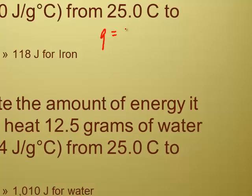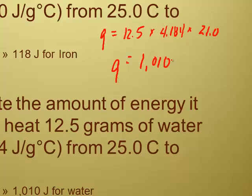So q equals 12.5 grams times 4.184 for the specific heat capacity times the 21 degrees that you just calculated for us a moment ago. And we wind up getting a q of 1,010 joules with three sig figs.